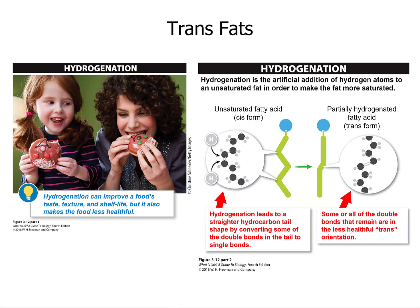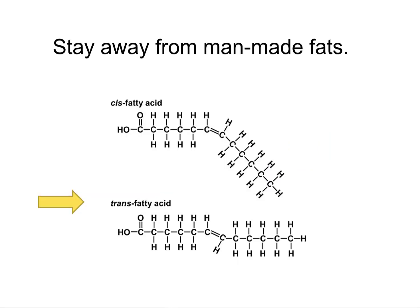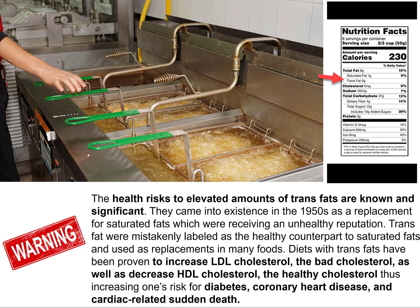Stay away from man-made fats. The cis form of unsaturated fat versus the trans fatty acid — the trans is the one we have to be careful of. Where do you come across trans fats? Things like french fries and potato chips are a good example — they go through high heat and various processes that tend to cause hydrogenation.